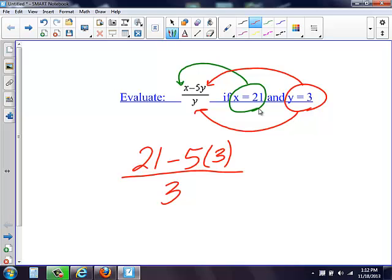Then we're going to do order of operations. So we look at the top. Our order of operations, we have a subtraction sign, we have a multiplication sign. In order of operations, it tells us to multiply first. So I still have my 21 minus. I'm going to multiply the 5 times the 3, I get 15, all over 3.